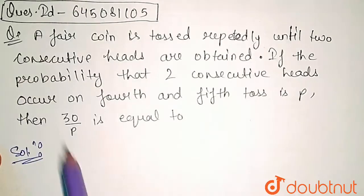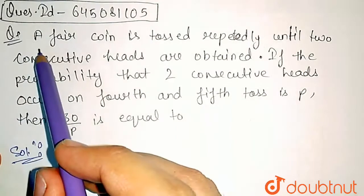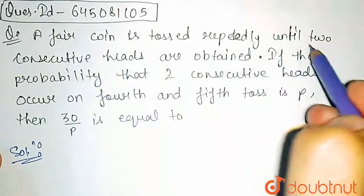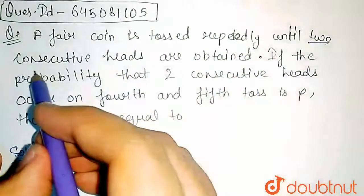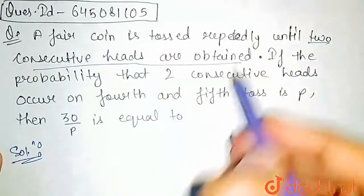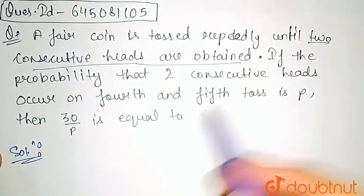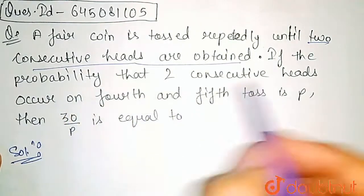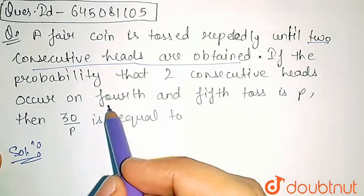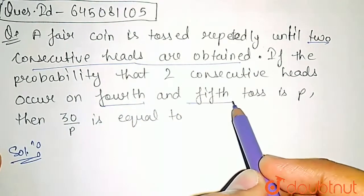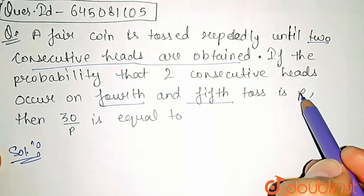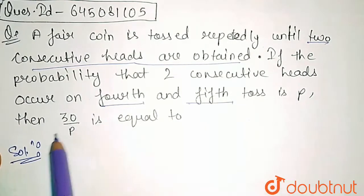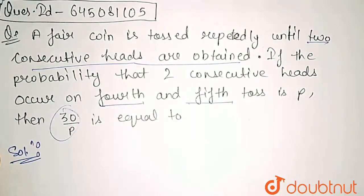In this question, it is given that a fair coin is tossed repeatedly until two consecutive heads are obtained. The probability that two consecutive heads occur on the fourth and fifth toss is P, and we have to find the value of 30 divided by P.